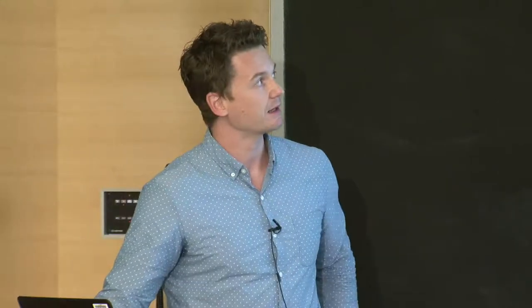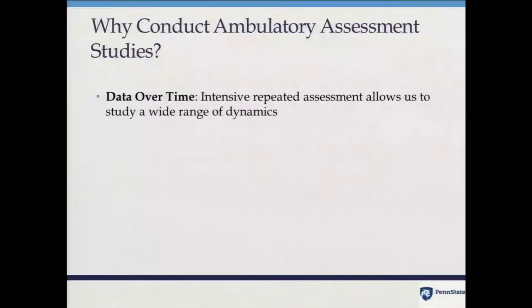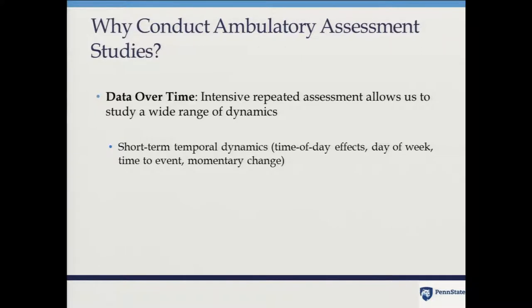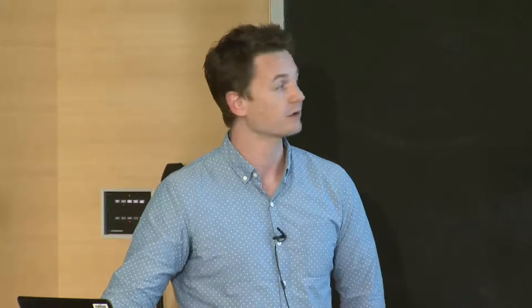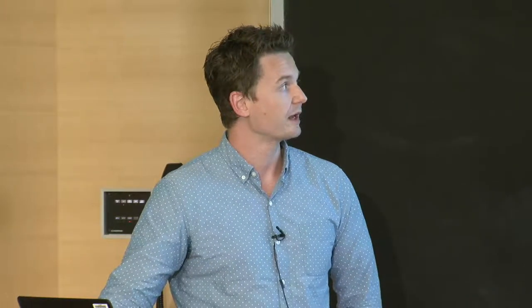Instead of asking how angry you've been on average this past week — which produces a strange conglomeration of recent anger, peak anger, and estimated averages — if we assess with enough frequency, we can empirically determine how angry you were and in what kinds of moments you were angriest. We're also getting data over time with repeated assessments across a variety of situations. This allows us to calculate temporal dynamics — for example, when to send a message to prevent cigarette smoking, or when a person is most at risk.